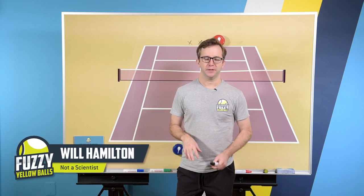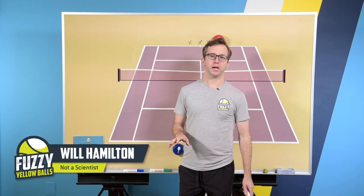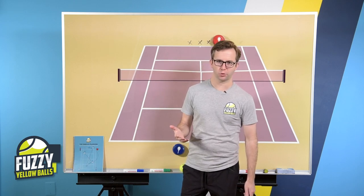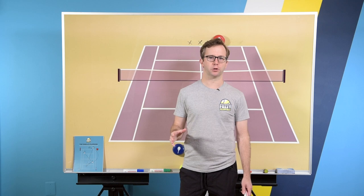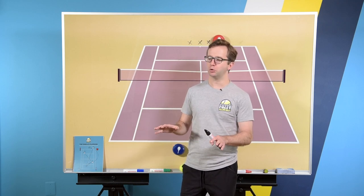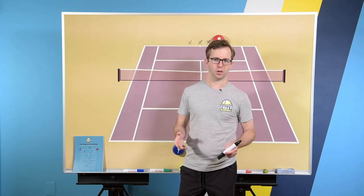There's a play called the Ankle Breaker that Iga Swiatek uses all the time. This is an awesome play you want to incorporate into your game, especially if you're playing like an aggressive baseliner, an all-court player, somebody who likes to change the direction of the ball a lot.